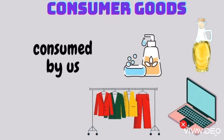First is consumer goods. These are goods which are consumed by us. So these include daily products like soap, oil, clothes, mobile, and laptop. These are all used by us and that's why they're known as consumer goods.